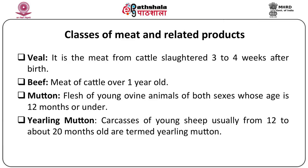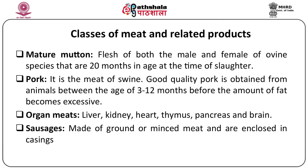From sheep we get mutton, yearling mutton and mature mutton, all slaughtered at different stages of age. Mutton is the flesh of young ovine animals of both sexes under 12 months. Yearling mutton is from young sheep about 12 to 20 months old. Mature mutton is the flesh of both male and female ovine species that are 20 months in age at the time of slaughter.